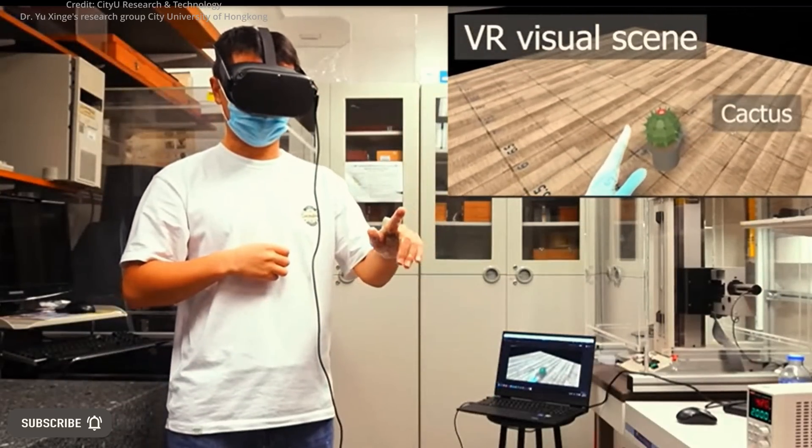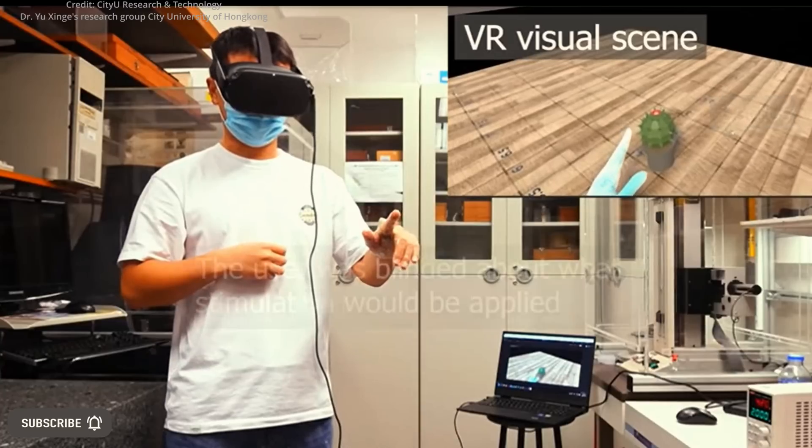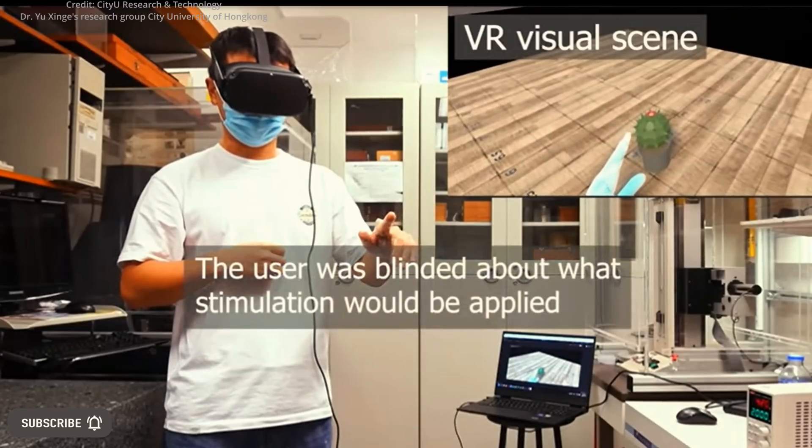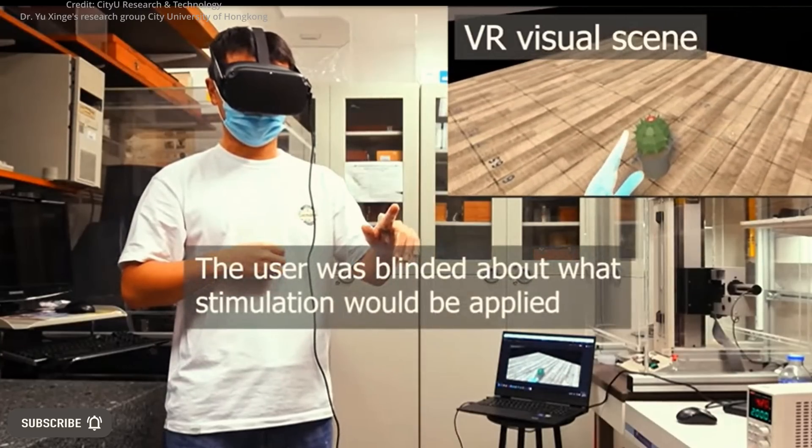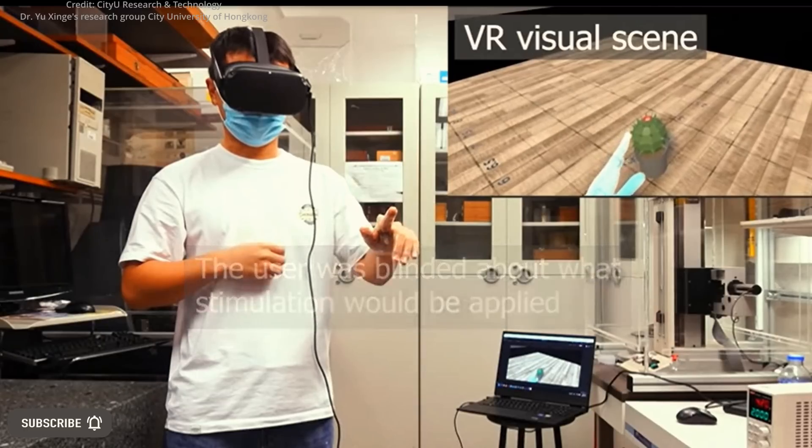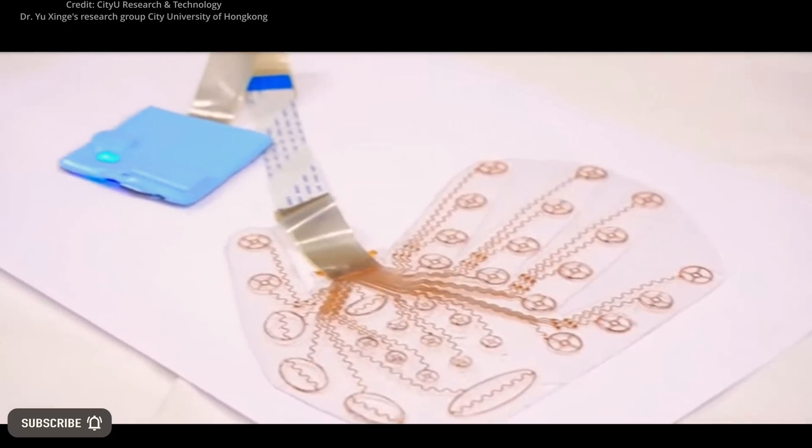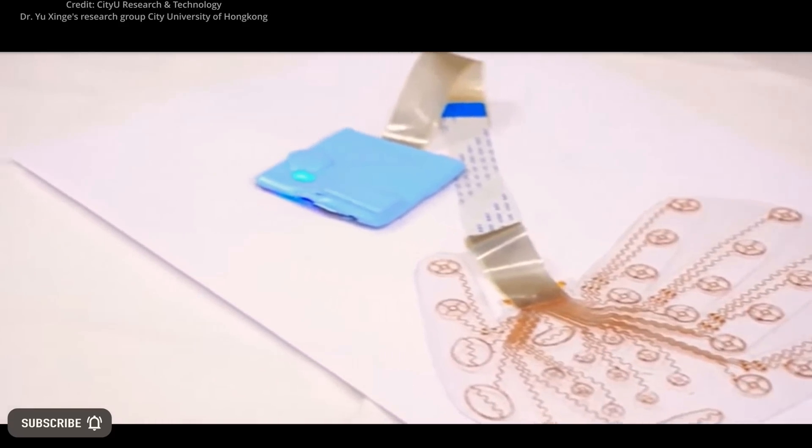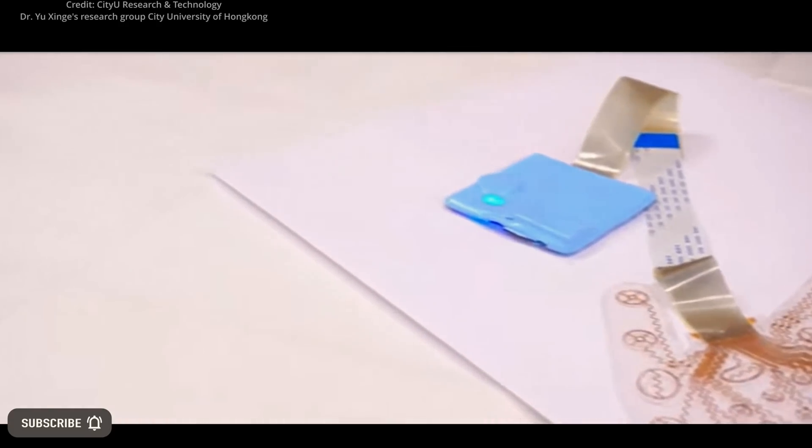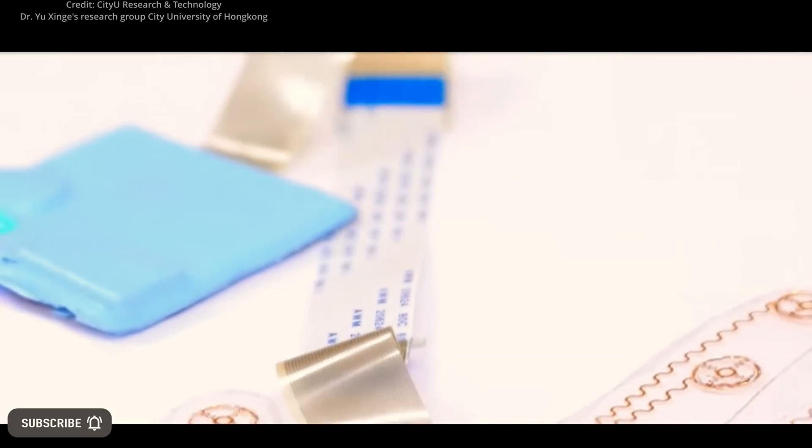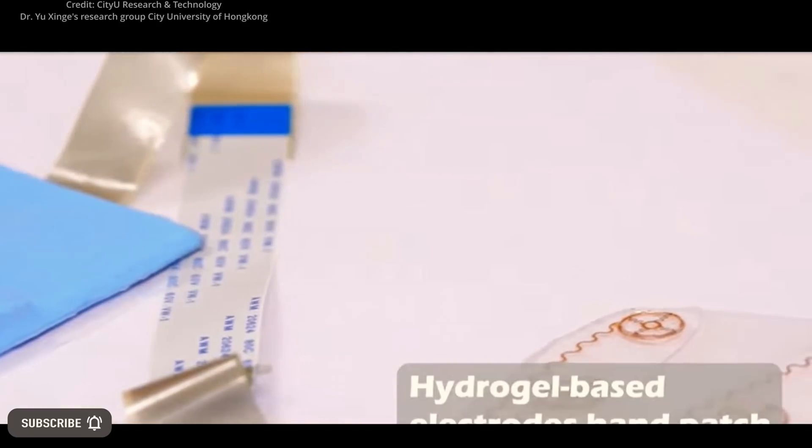Traditional haptic gloves often use cumbersome pumps and air ducts that are connected by cords and cables, which greatly detract from the immersive experience in virtual and augmented reality. The WITAC system consists of two parts: a small, soft control panel attached to the forearm called a mini soft driver unit and a thin hydrogel-based hand patch with electrodes on the palm, serving as a haptic interface.